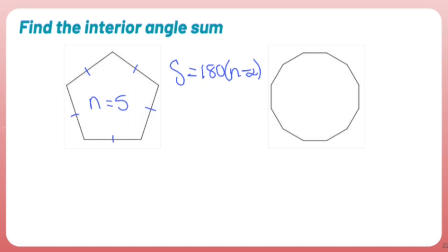So using the formula for this guy, I have S equals 180 times 5 minus 2. In other words, 180 times 3 is 540.